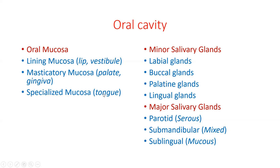The glands opening into the oral cavity are called salivary glands and are divided into minor salivary glands. Minor salivary glands are located in the oral mucosa itself and are named according to the region: labial glands in the lip, buccal glands in the cheek, palatine glands in the palate, and lingual glands in the tongue. The major salivary glands are parotid, submandibular and sublingual, located outside the oral cavity as discrete organs.